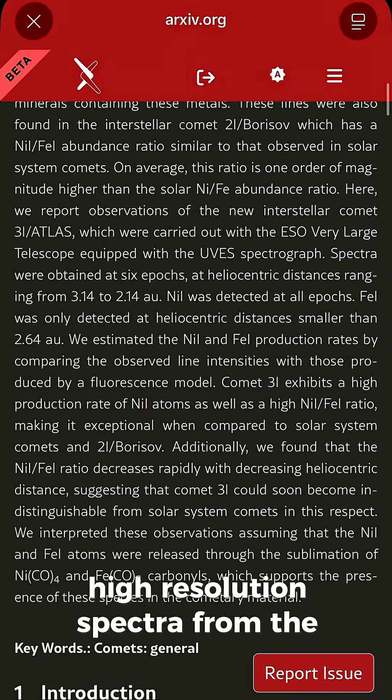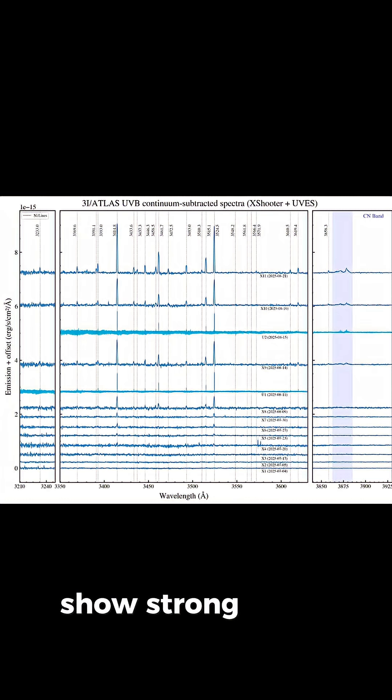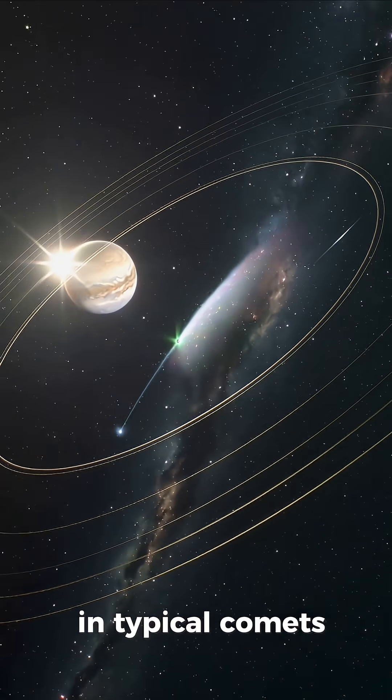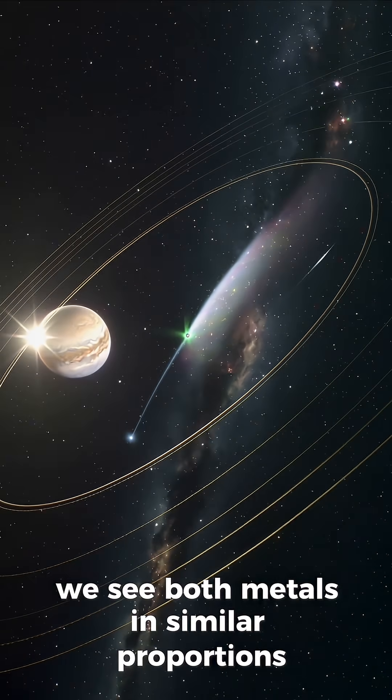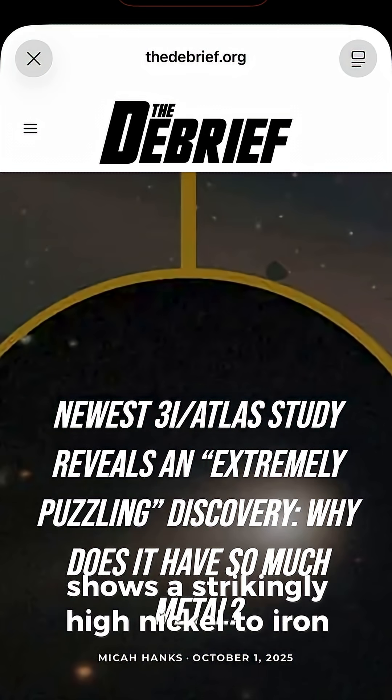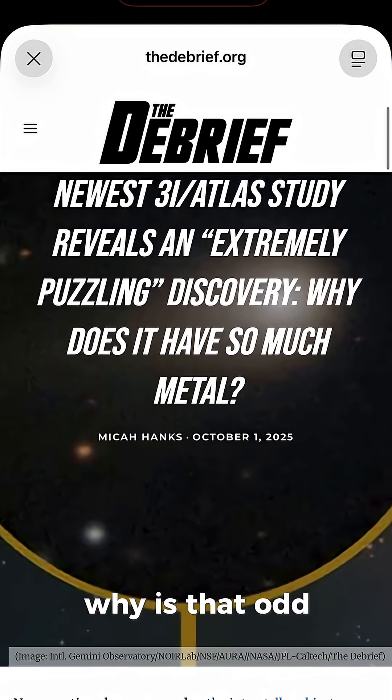New high-resolution spectra from the Very Large Telescope show strong nickel lines in the coma, while iron lines are faint by comparison. In typical comets, we see both metals in similar proportions. So 3i Atlas shows a strikingly high nickel-to-iron ratio. Why is that odd?